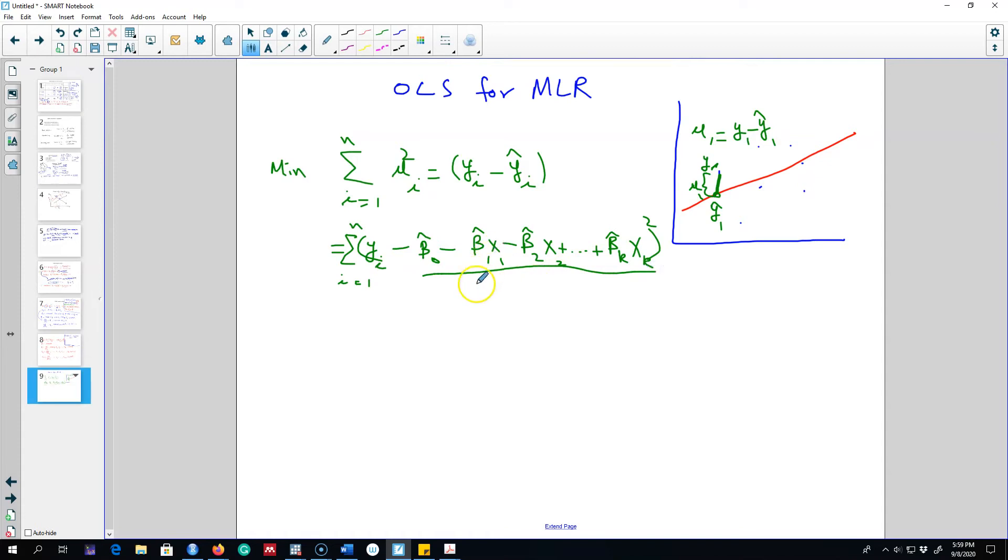So remember, this is our regression line. So this is y hat. This is our regression model. This is this red line. All we are trying to do is minimize this sum of squared residuals. We can apply the same principle as we saw in the previous case for the simple linear regression model, and we can get the first order conditions.